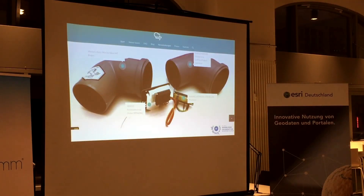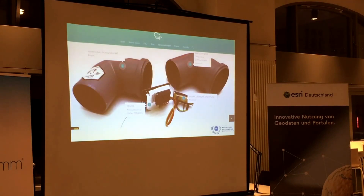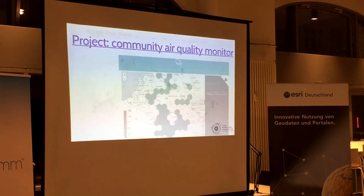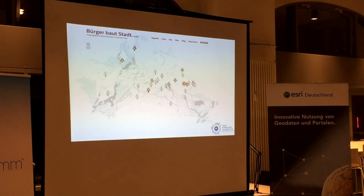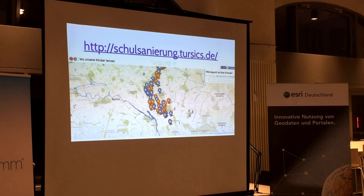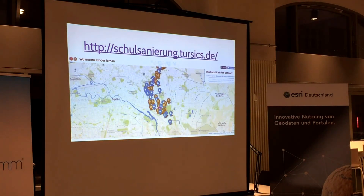One of these projects is Luftdaten.info. Basically we developed a small sensor to measure air quality, running on a Raspberry Pi — costs less than 50 euros — and you can see on a map what the air quality situation is. Another one is a citizen-facing tool for a town where you can see information on construction issues — a project from Thomas Tursic, one of the Code for Berlin guys. We also have a map on how much reconstruction investment for a local school would be necessary to bring it up to standard.